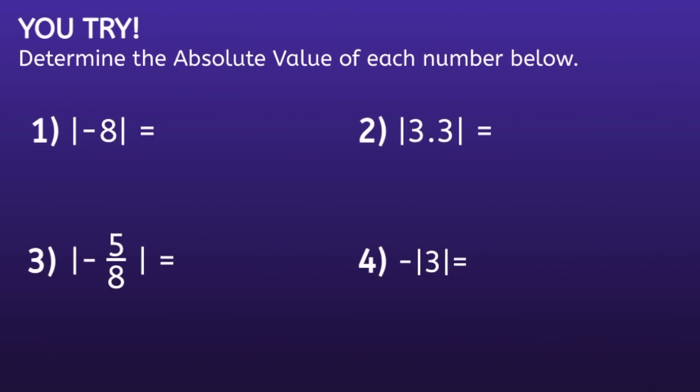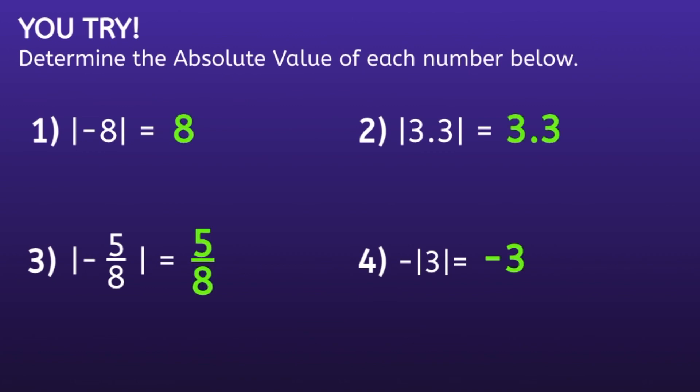Alright, now it's time for you to try out this new skill. Determine the absolute value of each number below. I would recommend you pause the video now, solve, and then resume when you're ready to see if your solutions are correct. Alright, let's take a look. The absolute value of negative 8 is 8. The absolute value of 3.3 is 3.3. The absolute value of negative 5 eighths is 5 eighths. And the negative absolute value of 3 is negative 3.